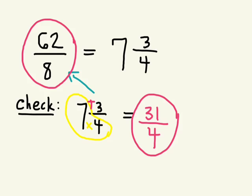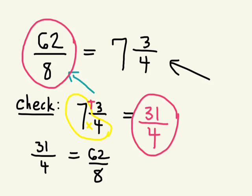No. But are they equivalent? Let's check. 31 over 4 should be the same as 62 over 8 if this answer is correct, right? Well, let's find a common denominator. Yeah, what can we multiply by? 2. If I multiply the denominator by 2 to get 8, what do I have to do to the numerator?